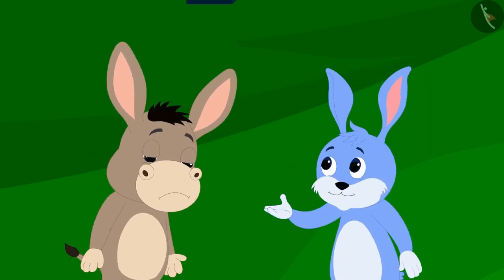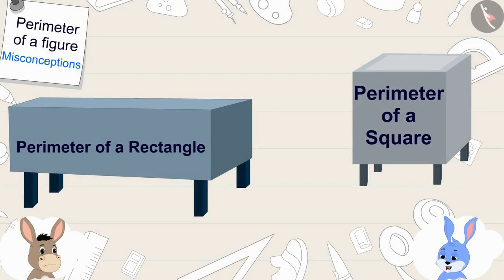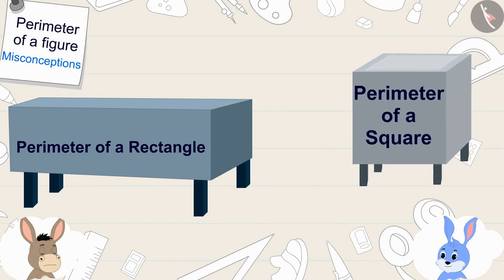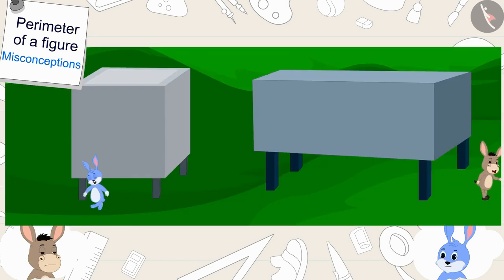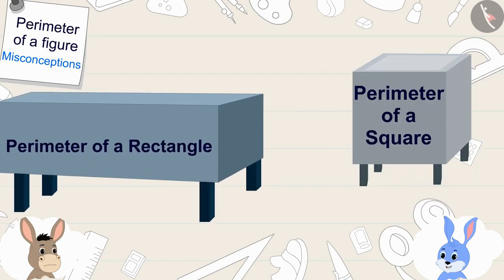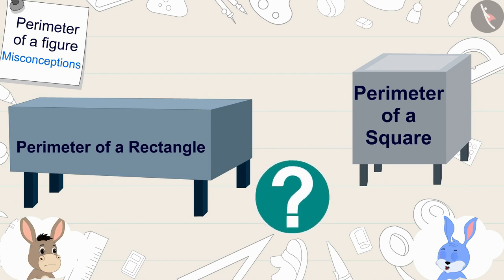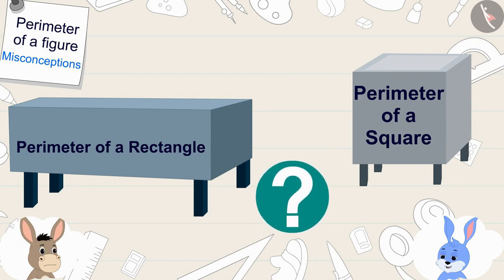'No Bholah, it does not necessarily mean that the perimeter of a rectangle is always greater than the perimeter of a square. We both circled our own tanks, so the distance we covered would be equal to the perimeter of those tanks. Let us calculate the perimeter of these two tanks — then you will know that both of us covered exactly the same distance.'